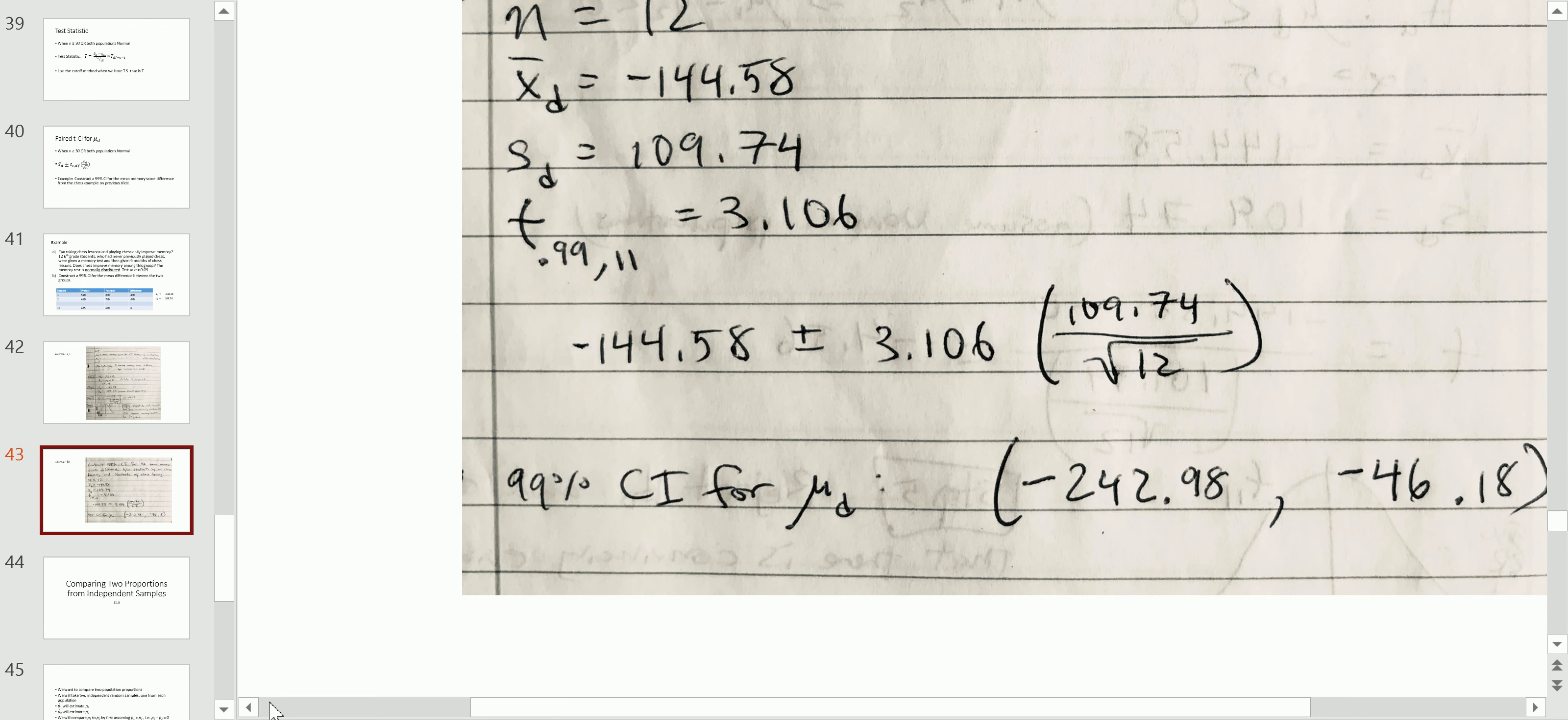And then finally, construct a ninety nine, I believe, percent confidence interval. We take X bar D plus or minus T multiplier for 99 percent confidence level. Eleven degrees of freedom comes straight from the table. S_D standard deviation of the differences over square root of n. So this is the margin of error. This whole thing I'm putting a box around. You add and subtract that margin of error to the point estimate, which was X bar D. All these numbers came from the problem. This one came from the table.